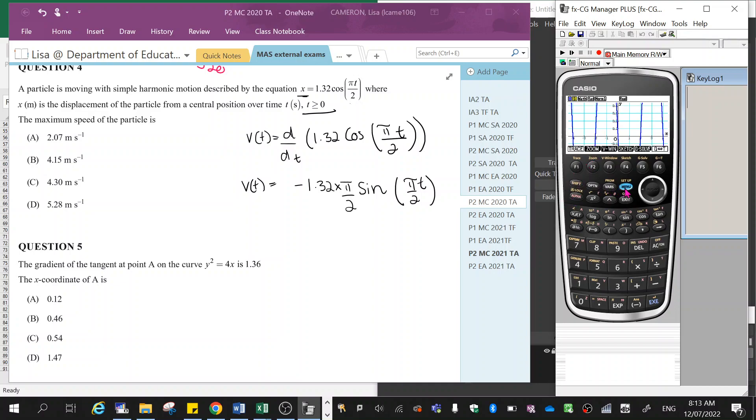you go shift, set up, and then keep going down until you hit angle, and then change from degrees to radians down here.